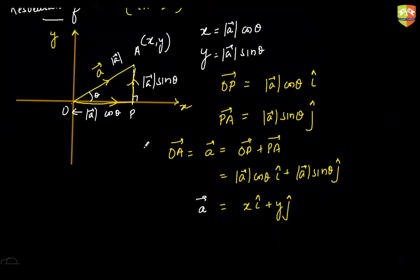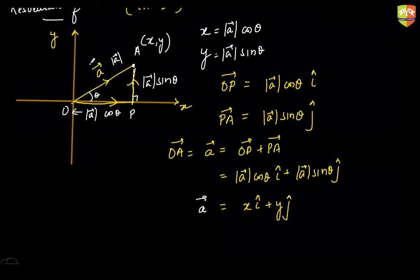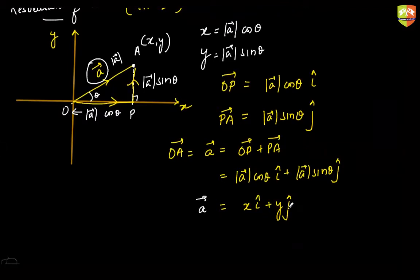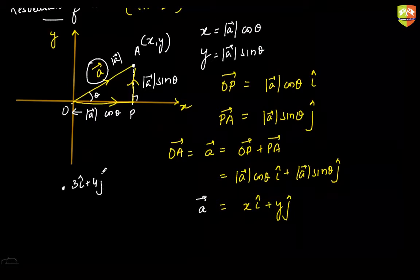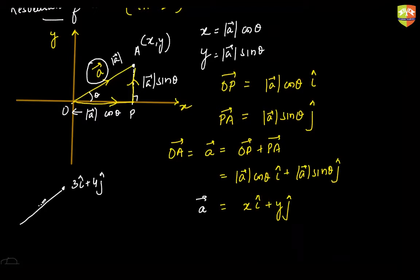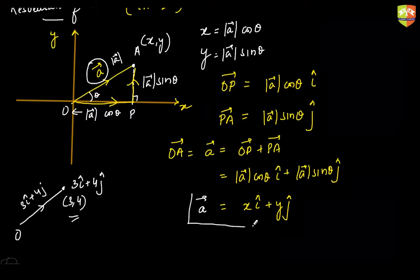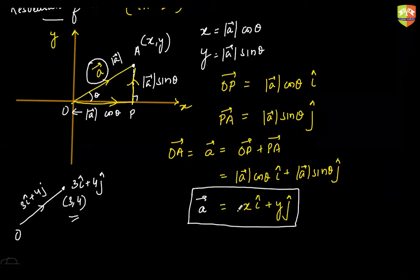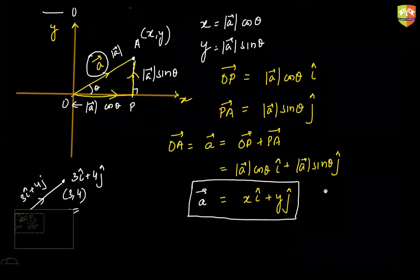One thing is clear: the position vector of point A — the vector connecting the origin to point A — is the coordinates of that point along with i and j unit vectors attached to them. So if the position vector of a point is 3i + 4j, that means the coordinate of that point is (3, 4). This is how we resolve a vector along the x and y directions, which we call the resolving of vectors.